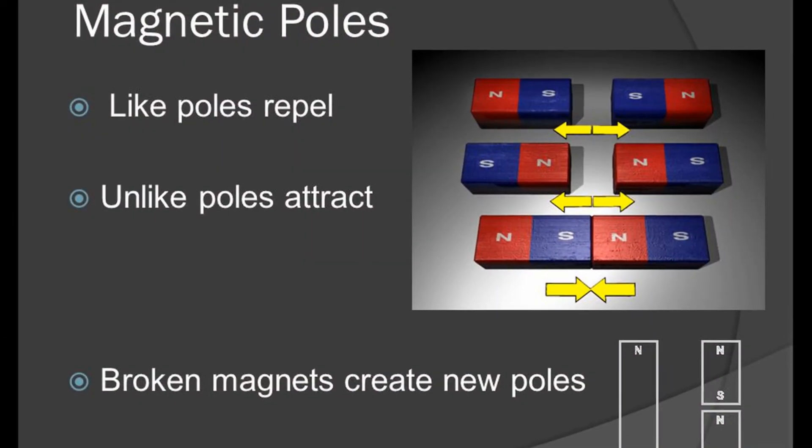Poles exist in pairs. If a magnet is broken into two parts, instead of obtaining separate north and south pole, each of the two parts is found to possess both the polarities. That is each piece is still a magnet.